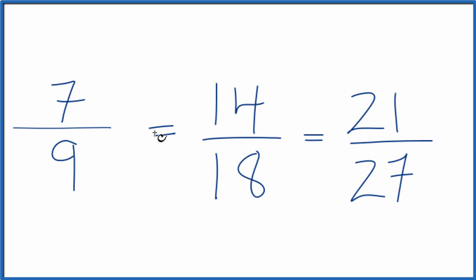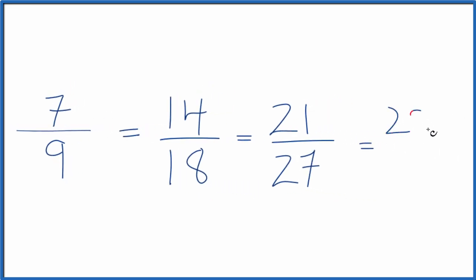Let's do one more. How about 7 times 4 gives us 28. 9 times 4 gives us 36. That's another equivalent fraction.